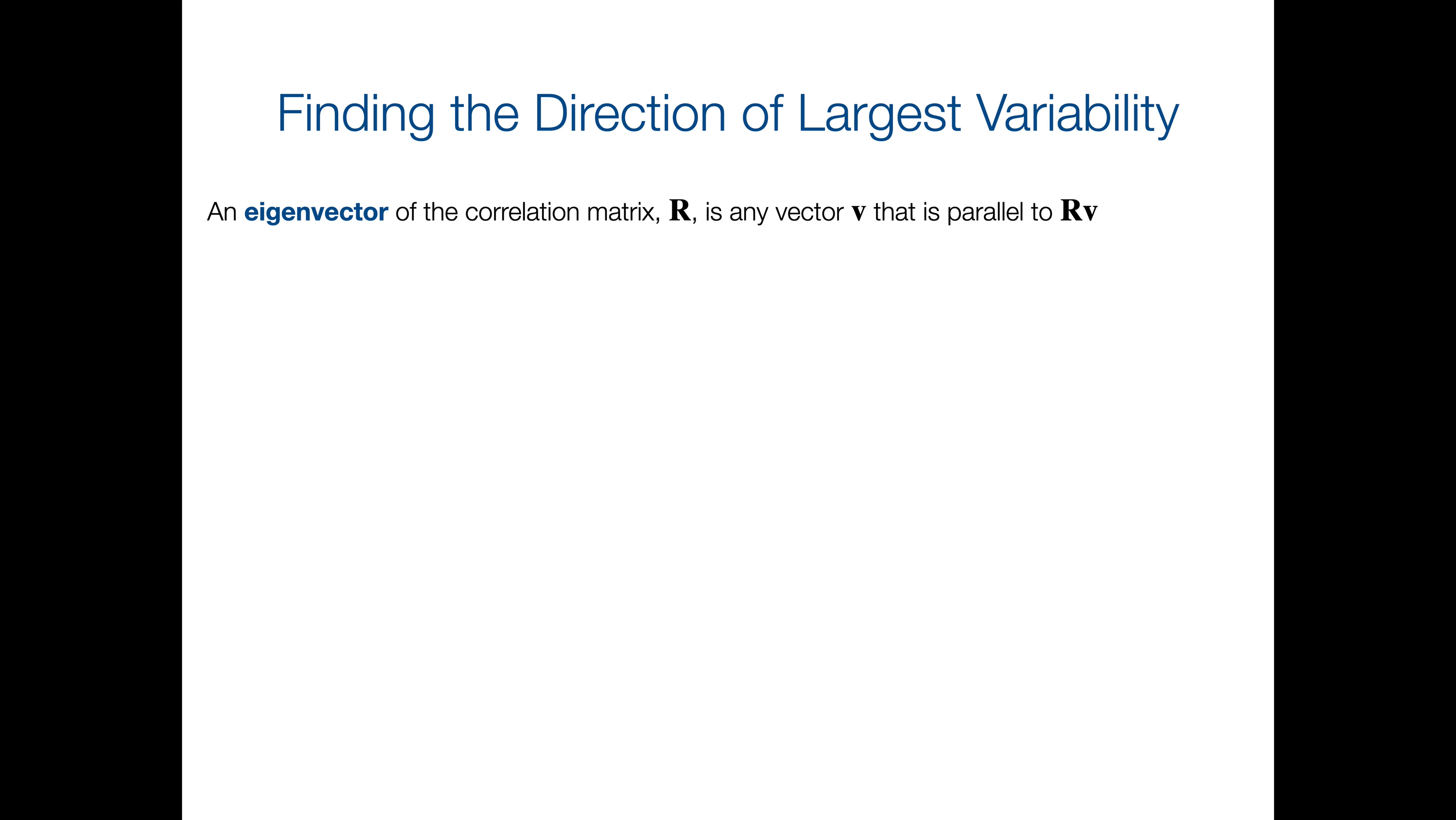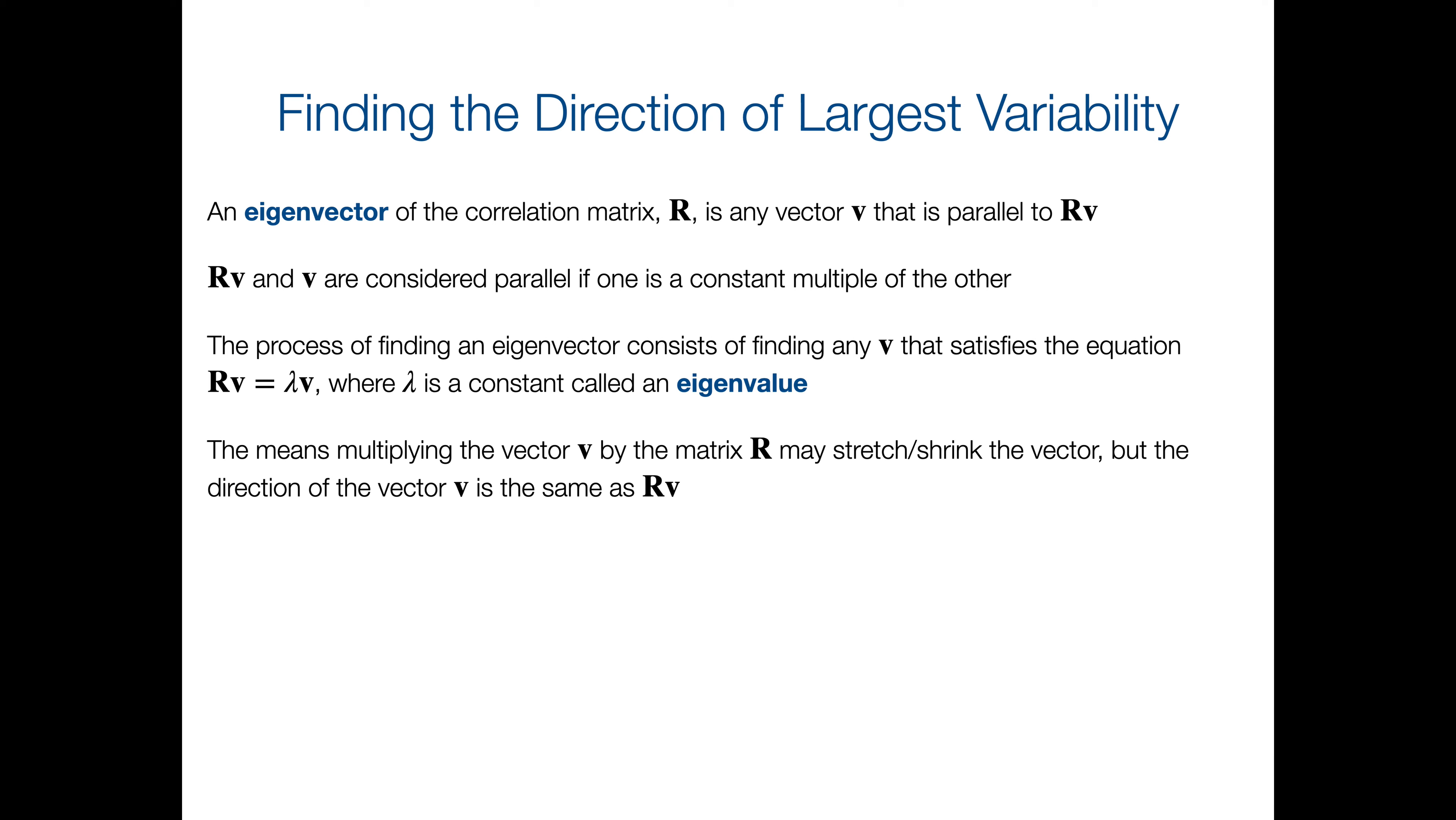So an eigenvector of the correlation matrix R is any vector V that is parallel to RV. So what does it mean to be parallel? Well, they're parallel if one is a constant multiple of the other. So finding an eigenvector consists of finding any vector V that satisfies the equation R times V is equal to lambda V, where lambda is just a constant, and specifically it's a special one called an eigenvalue. So you've seen eigenvalues before too. This means multiplying the vector V by the matrix R will either stretch or shrink the vector, but it's not going to change the direction of it. So that's important, that's the parallel part.